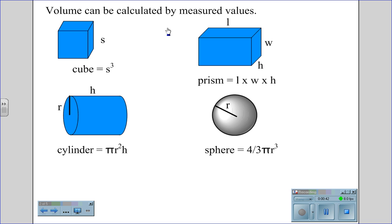Volume can be calculated by measured values. For instance, a cube has an equation of s cubed for the volume. A prism is length times width times height. A cylinder is πr²h, and a sphere is 4/3πr³.